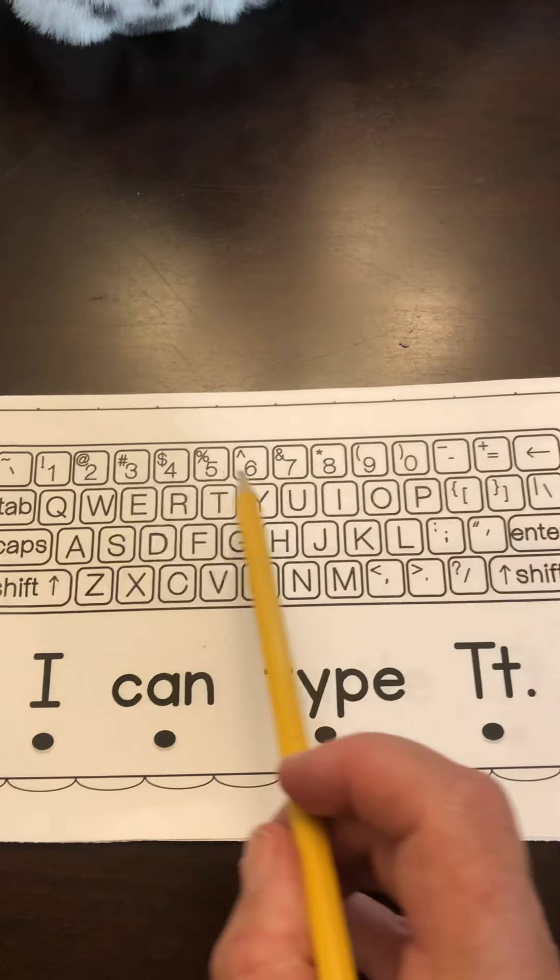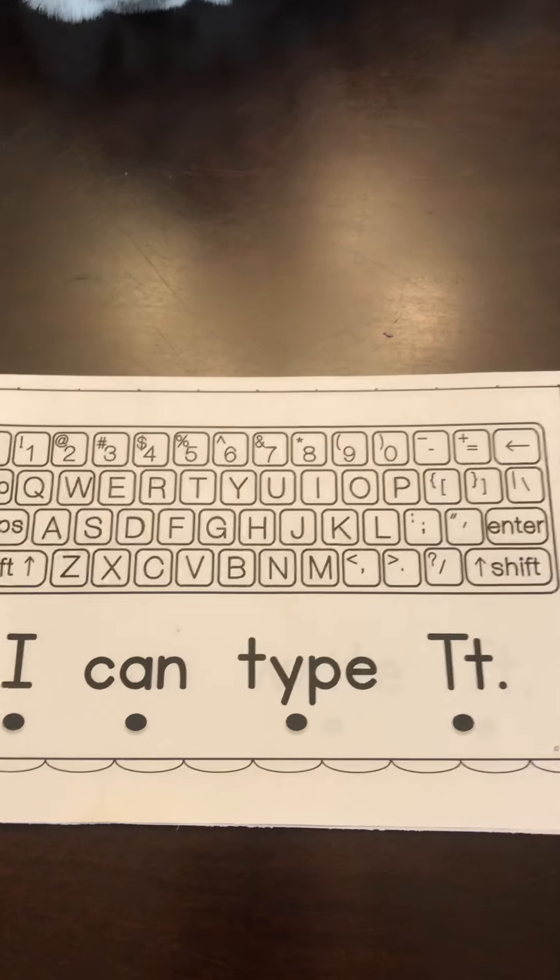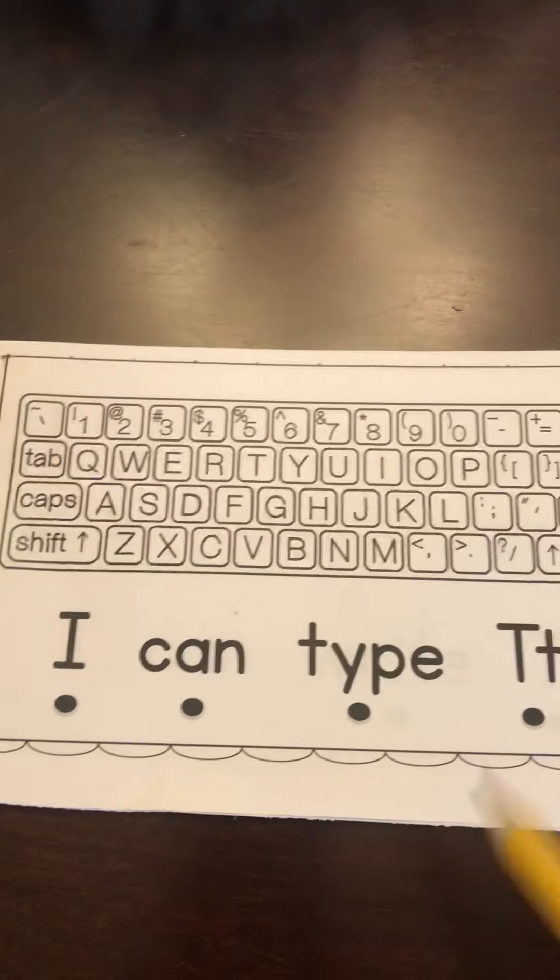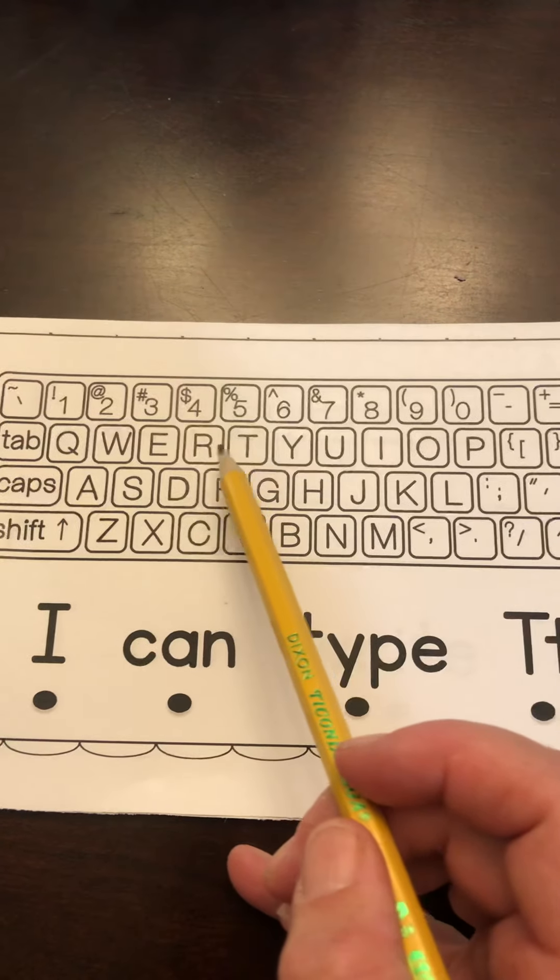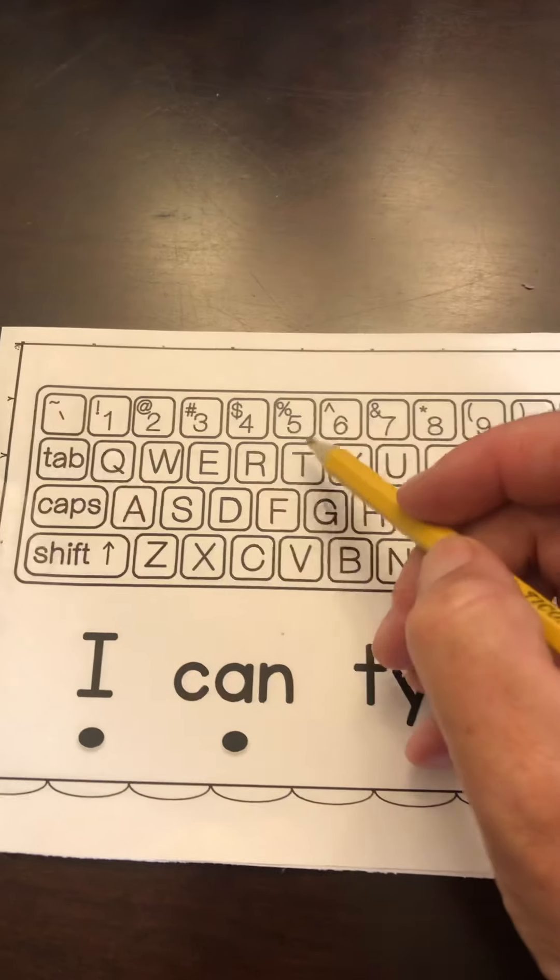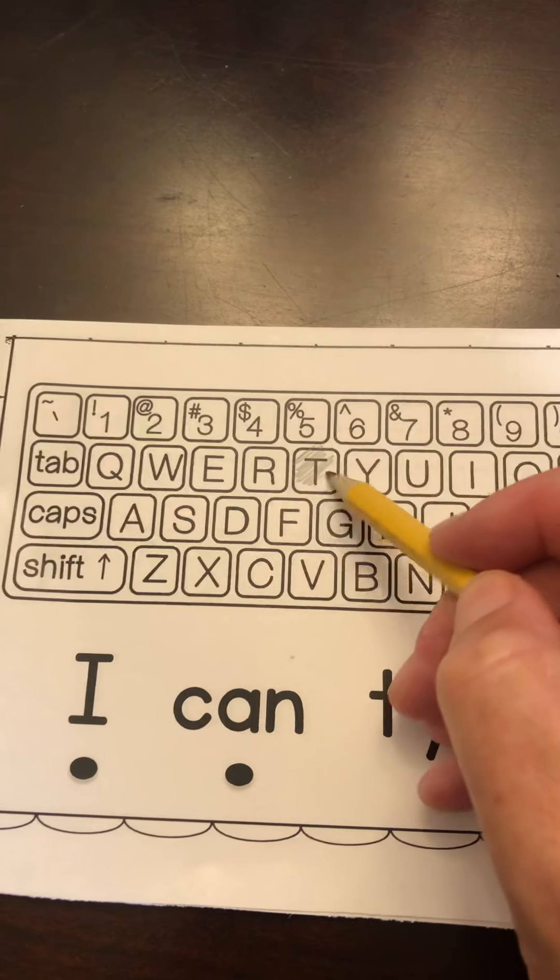Now on the keyboard, we have to look for the letter T. Now the whole top row has numbers. So we know it's not on the top row. Let's go to the next row. Oh, there it is. So you can just color it in with your pencil.